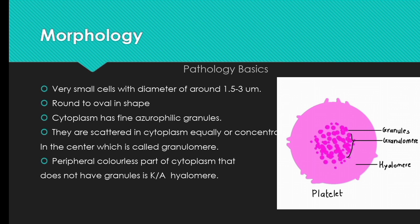Their cytoplasm contains fine azurophilic granules. In some platelets, granules are scattered in the cytoplasm, while in other types of platelets, granules are concentrated in the center. The central part containing granules is called the granulomere, and the peripheral colorless part of the cytoplasm that does not have granules is known as the hyalomere.